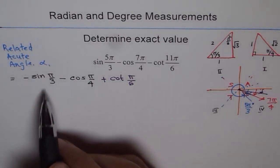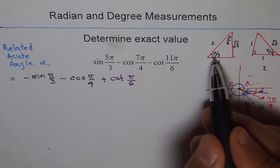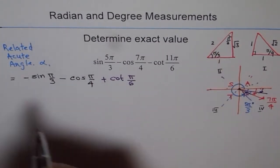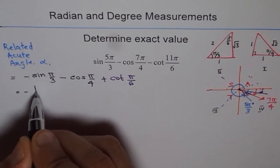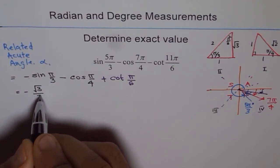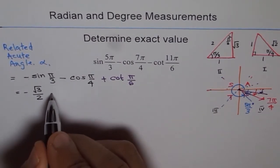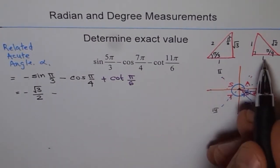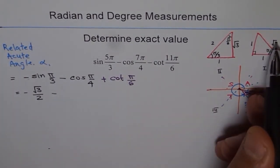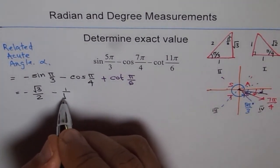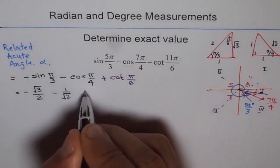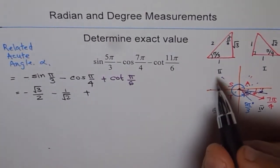Now I can use my special triangles to write down their values and calculate the answer. Minus sin π/3, π/3 is here, sin is square root 3 over 2, so I will write here minus square root 3 over 2, minus cos of π/4.